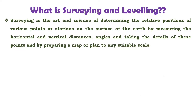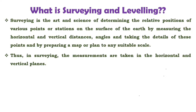Surveying is the art and science of determining the relative position of various points or stations on the surface of earth by measuring the horizontal and vertical distances, angles, and taking the detail of these points and by preparing a map or plan to any suitable scale. In surveying, we need to take the relative position of different points on the surface of earth by taking horizontal and vertical measurements, and finally we need to prepare a plan or map. Thus, the measurements in surveying are taken in horizontal and vertical plane.